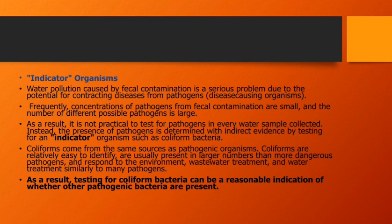As a result, it is more practical not to test for every pathogen in every water sample collected. Instead, the presence of pathogens is determined with indirect evidence by testing for an indicator organism such as coliform bacteria, which come from the same sources as pathogenic organisms.